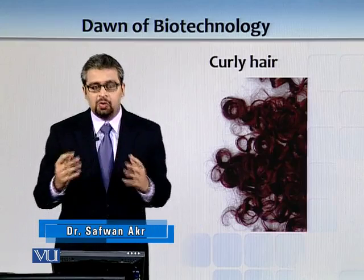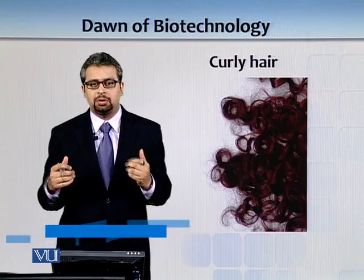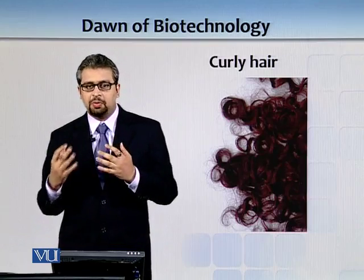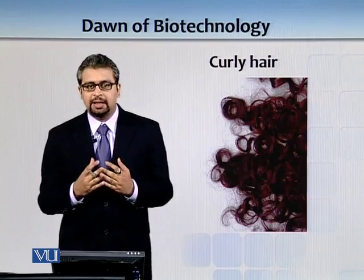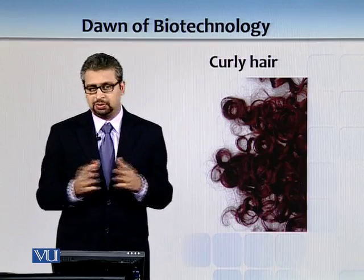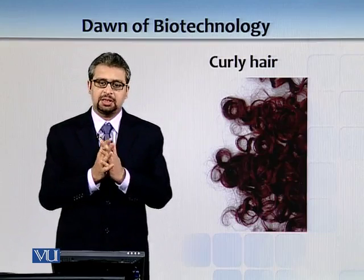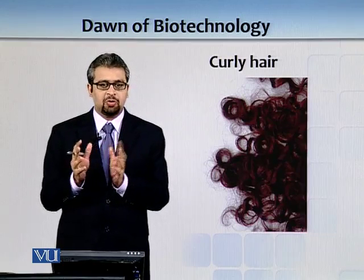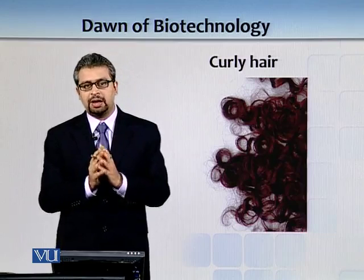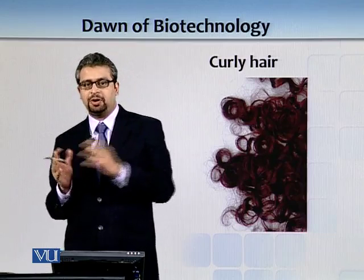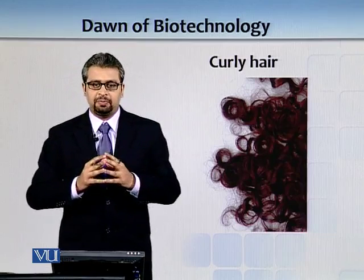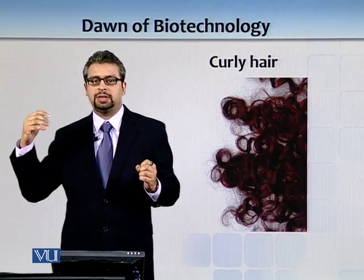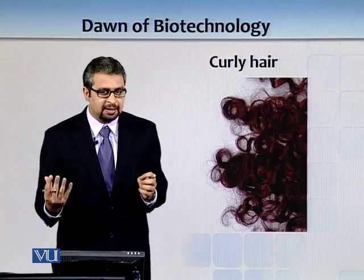People started to discuss how genes control basic traits, and identified that some traits are continuous. Hair is a continuous trait — you can have a range. For example, African populations have very curly hair, and then some people have less curly hair.